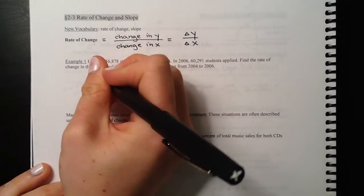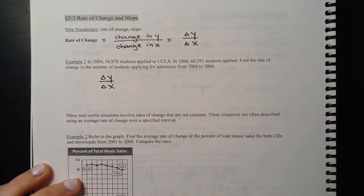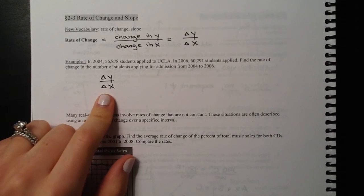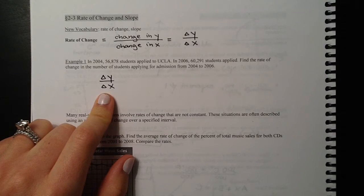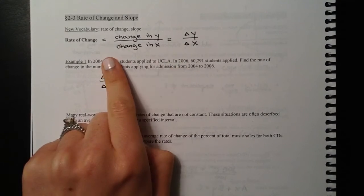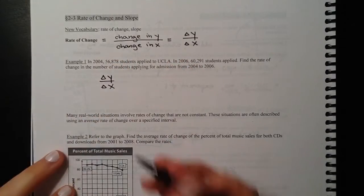So we've got delta y over delta x. If you're ever wondering which one should be the y and which one should be the x, remember y is your dependent variable. It changes as something else changes. X is your independent variable. That's something you don't really have control over. Time is changing no matter what you do. So x is going to be your independent variable, whereas the number of students applying is going to be your dependent variable.